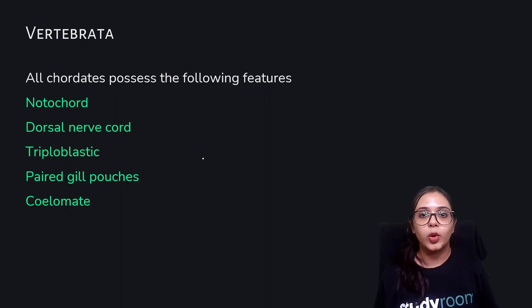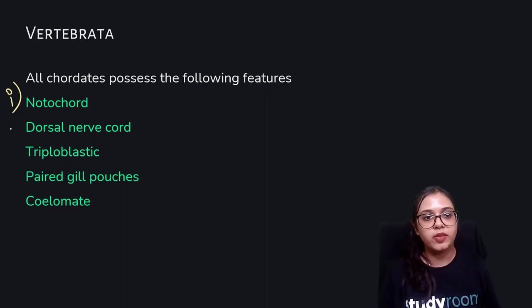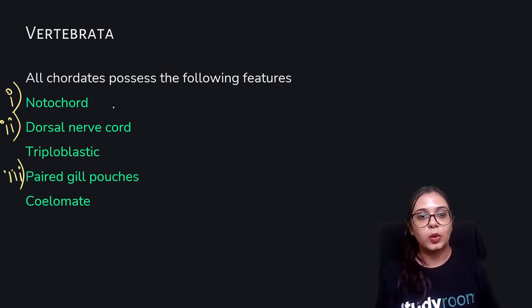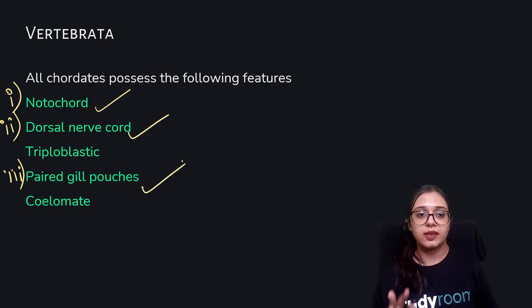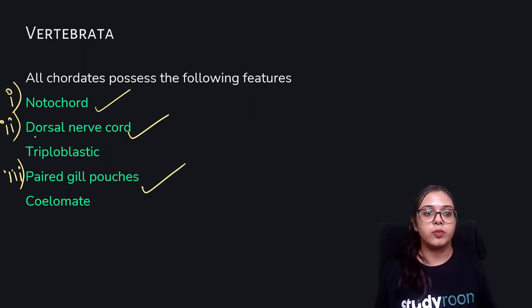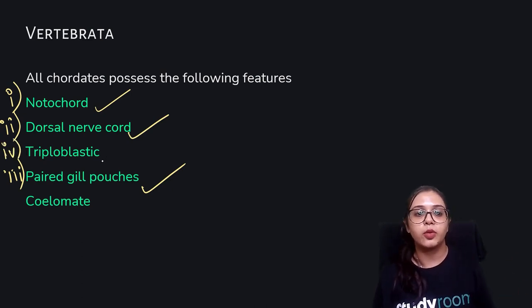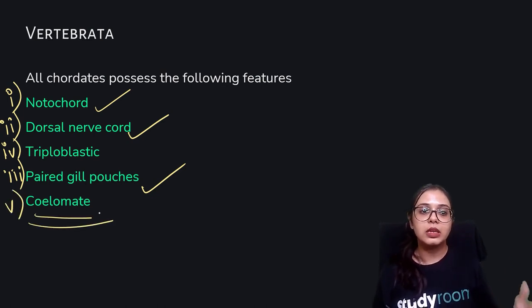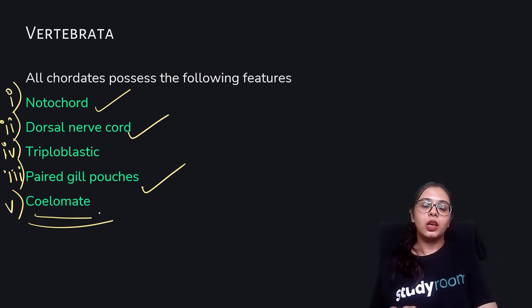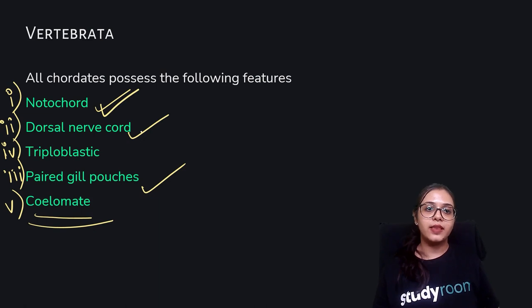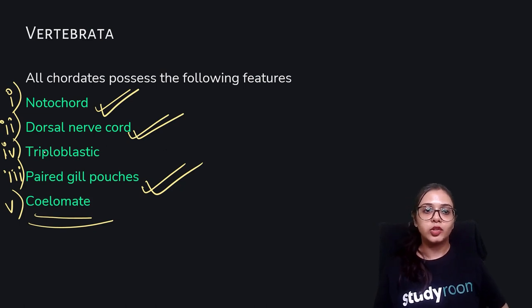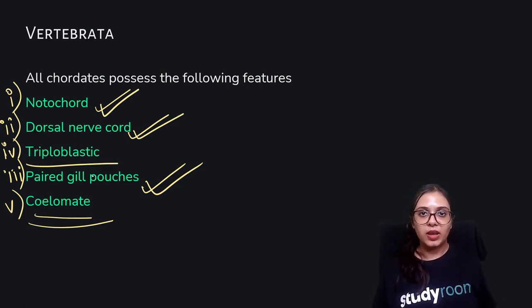All Chordates possess the following features: presence of a notochord, presence of a dorsal nerve cord, and presence of paired gill pouches — these three are the most important characteristics. In addition, they are triploblastic with ectoderm, mesoderm, and endoderm, and they are coelomate.